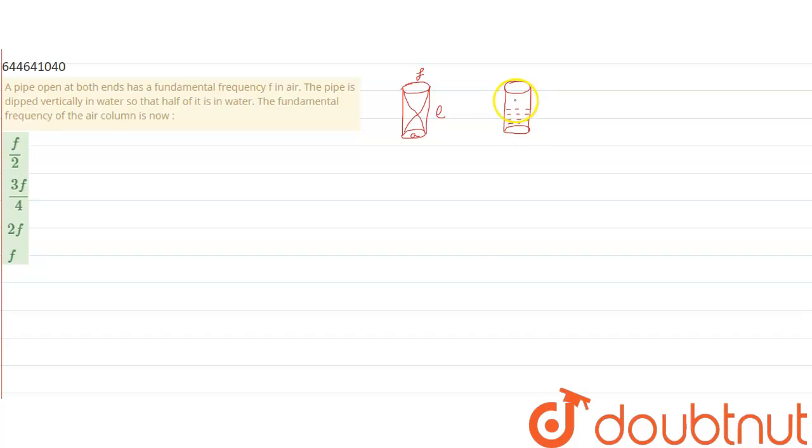So now the node will be like this, then they are asking about the frequency. Now the length of pipe will automatically be L by 2.